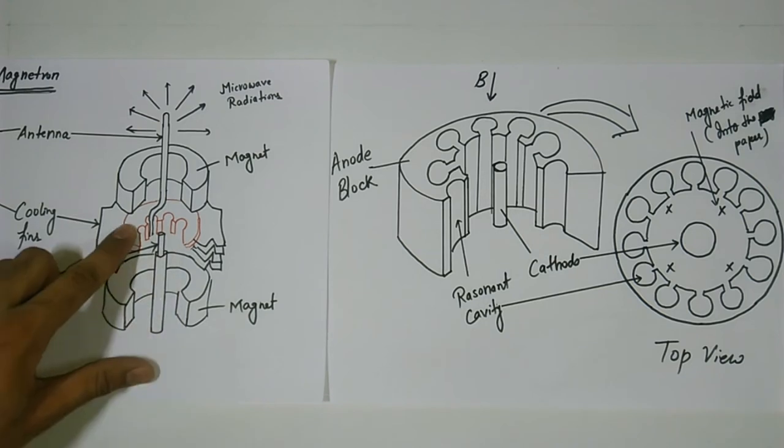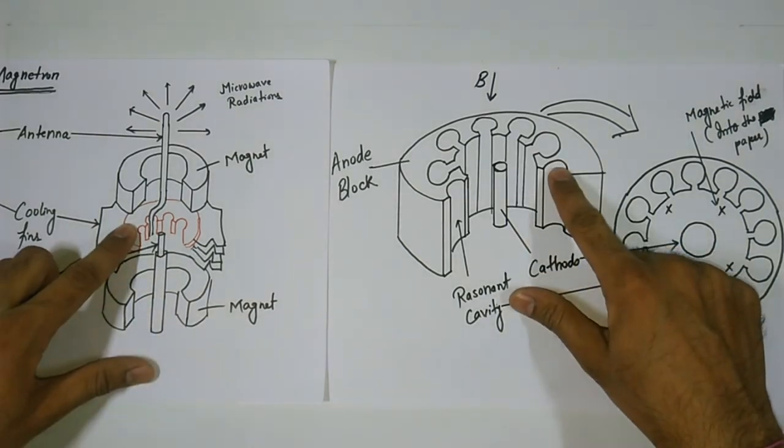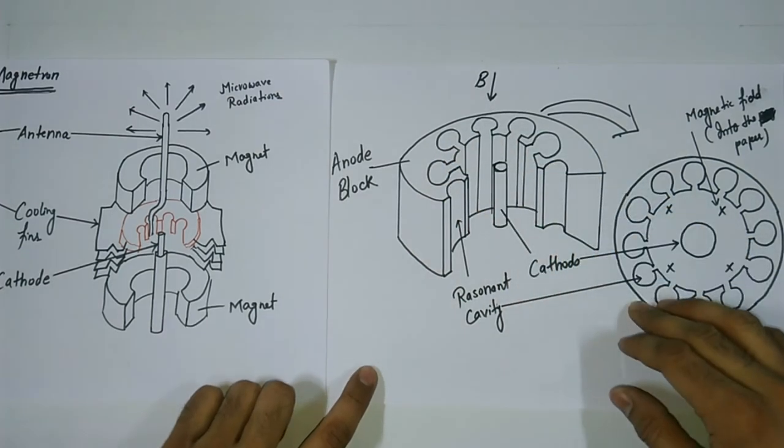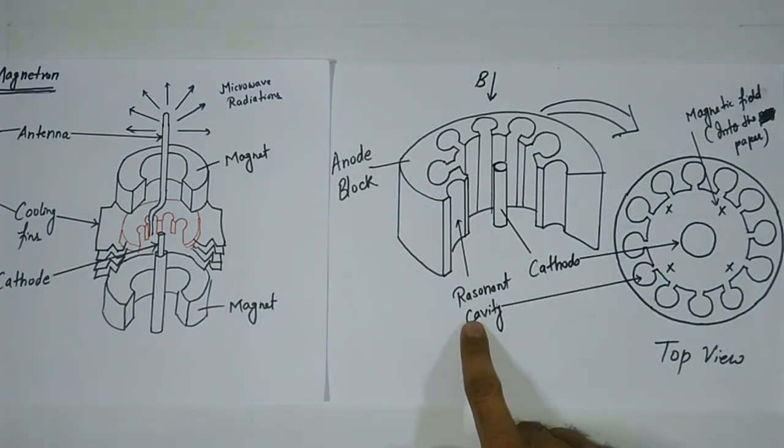The anode of a magnetron is fabricated into a cylindrical solid copper block. There are 8 to 20 cylindrical holes around its circumference. These are called resonant cavities. Each cavity works as a parallel resonant circuit.